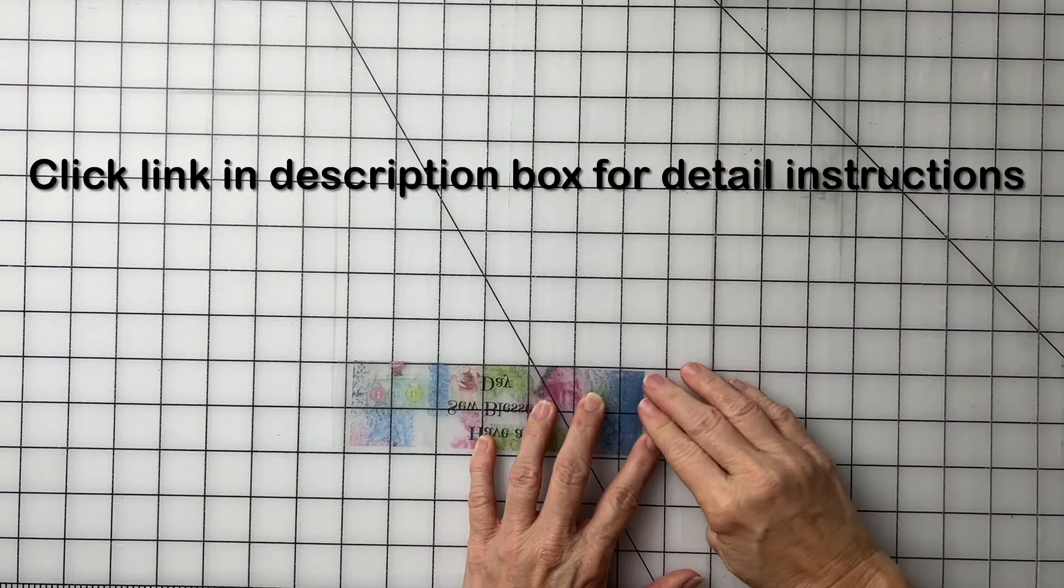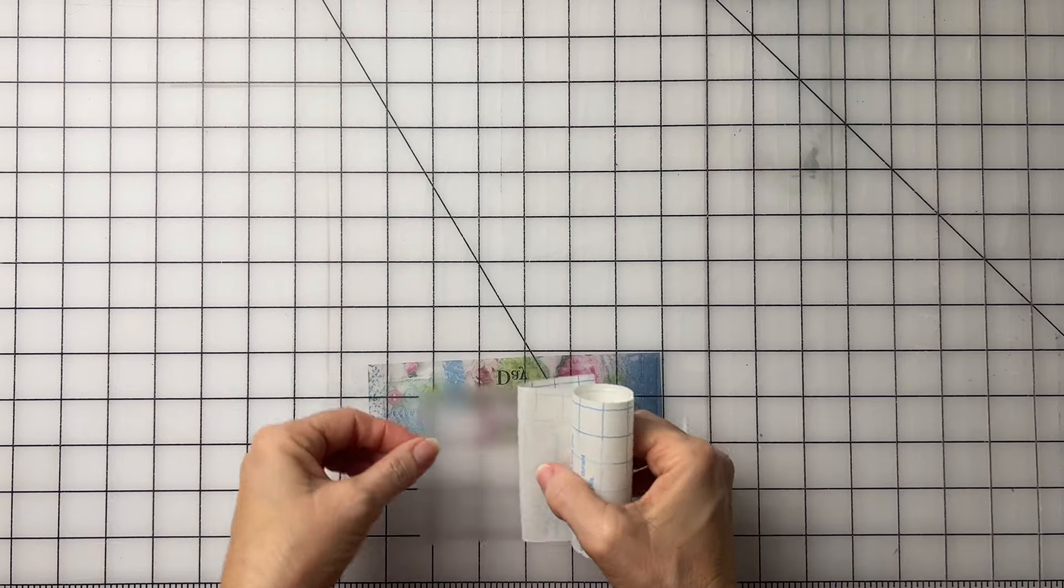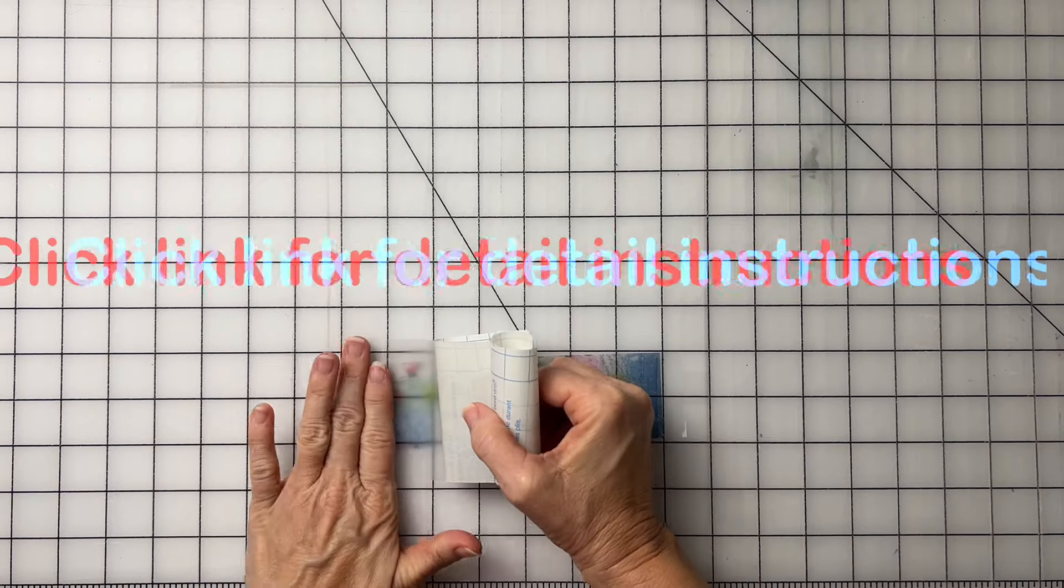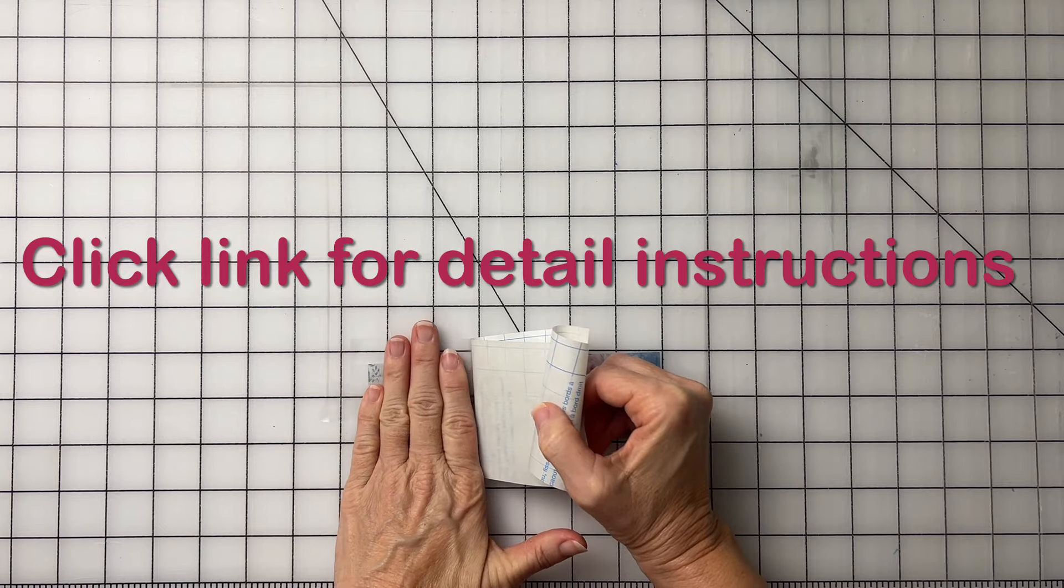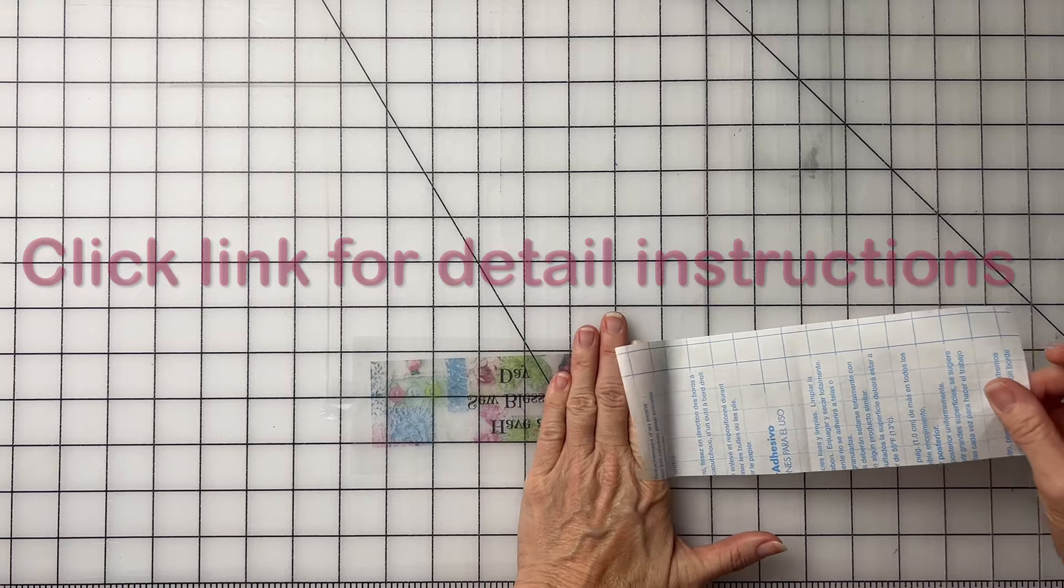Just to hold it in place like that so it doesn't move. I'm going to just place this and smooth it as I pull the paper and just keep smoothing it all the way down.